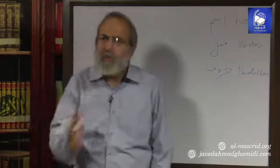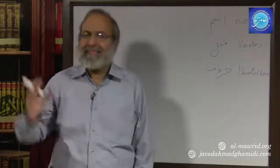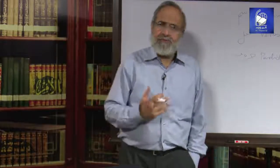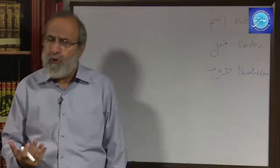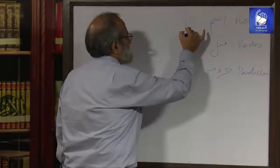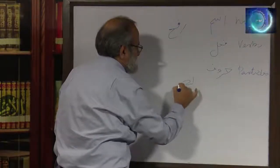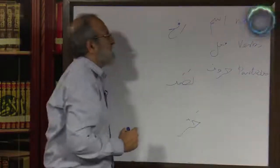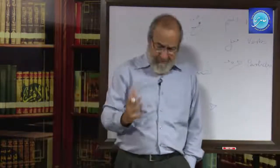Thereafter we'll move towards verbs. While we discuss the two, the particles will always find a role here and there to be understood, not quite as a distinct category of words but as helping, aiding words. When we discuss nouns, we've started understanding i'rab and we've understood that i'rab takes three forms — three categories, three cases. We've already discussed the case of Rafa, and what is left is Nasab and Jar.